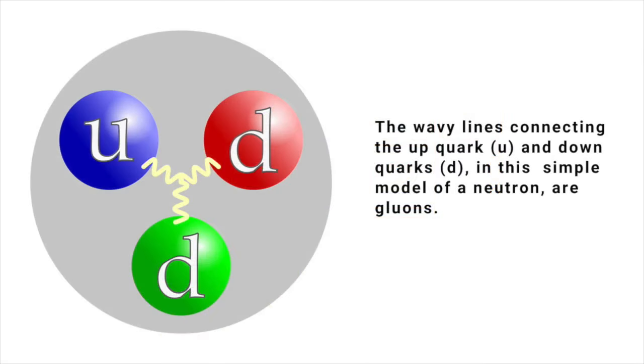Gluons, of which there are eight different types, are the carrier particles of the strong interaction that holds quarks together. Gluons are electrically neutral and have spin 1. They're the equivalent in quantum chromodynamics of photons in quantum electrodynamics.